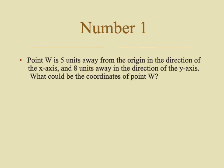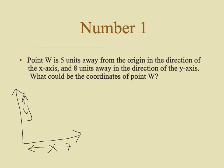Our problem says: point W is five units away from the origin in the direction of the x-axis, and eight units away in the direction of the y-axis. What could be the coordinates of point W? Even though it doesn't give us a coordinate grid, try to think about what a coordinate grid would look like. The x-axis is what goes on the horizontal — it's left and right — and then the y-axis is up and down, and the origin is the space where those two axes meet, the one right in the middle.